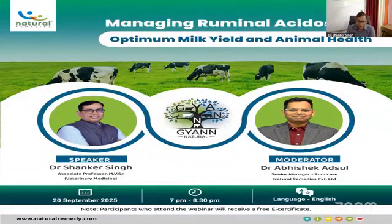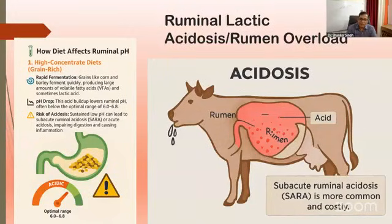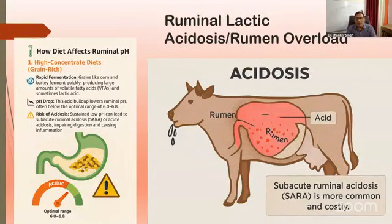We are talking about rumenal acidosis, which is a common problem. Rumenal acidosis is also known as rumenal overload or grain engorgement.